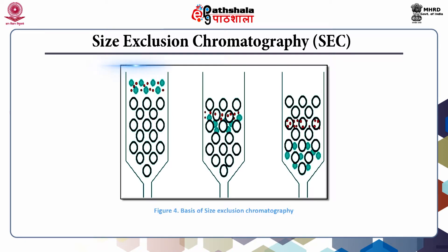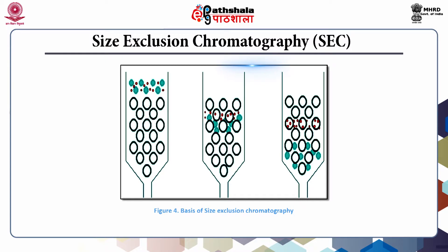Size exclusion or gel filtration chromatography separates proteins on the basis of the size of the protein molecule. The stationary phase comprises porous beads made of polymers such as dextran, agarose, or polyacrylamide, which are both insoluble and highly hydrated. Commonly used commercially available beads include Sephadex, Sepharose, and Biogel. When a protein mixture is applied to the column, small molecules diffuse into the internal volume of the beads and are distributed in aqueous solution both inside and around the beads, while large protein molecules are unable to enter the beads and remain only in the solution between them.